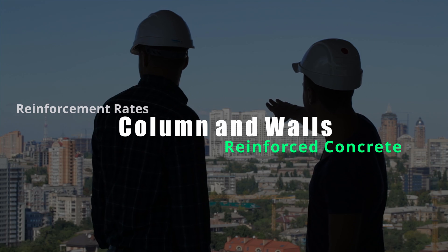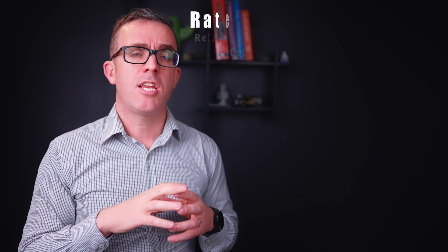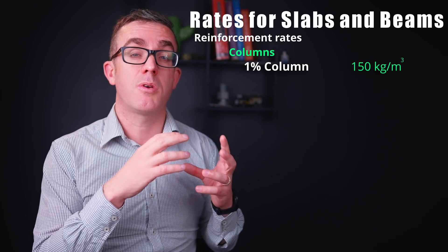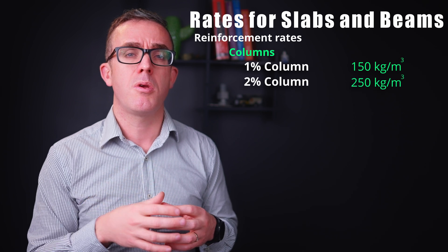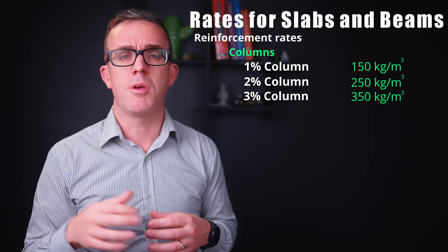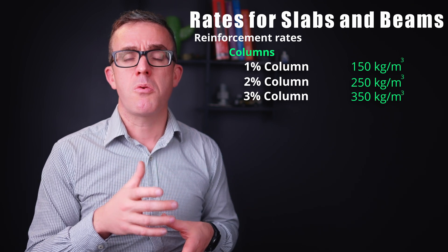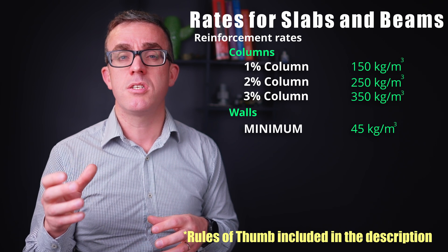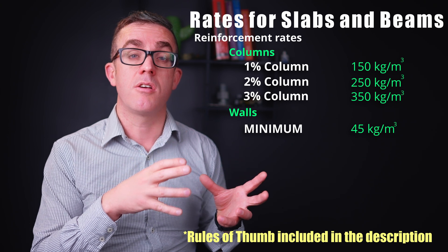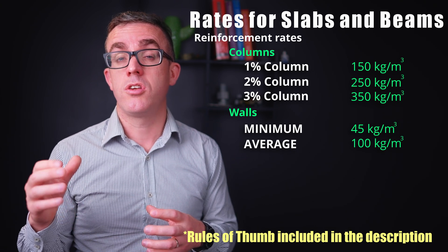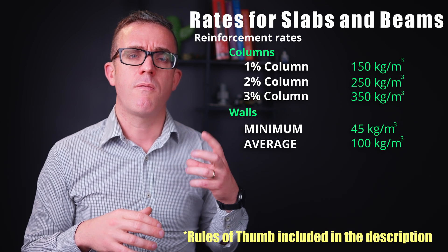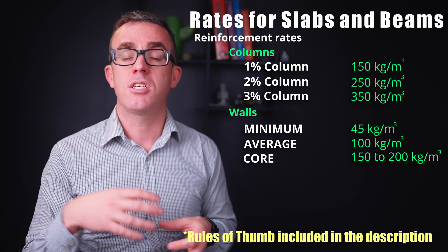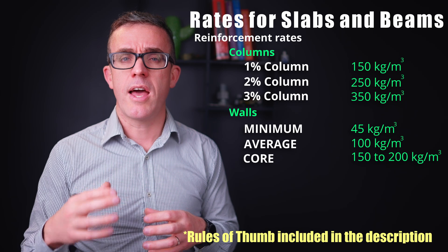For reinforcement rates in columns, you want to maintain as low reinforcement as possible. A 1% column is roughly 150 kg/m³, a 2% column is around 250 kg/m³, and a 3% column is upwards of 350 kg/m³. For walls, the minimum reinforcement rate is 45 kg/m³ for crack control, but typically around 100 kg/m³ based on loads. Core walls are higher — between 150 and 200 kg/m³ — due to flexural reinforcement, shear reinforcement, and boundary confinement zones.